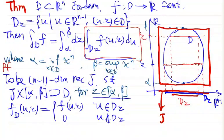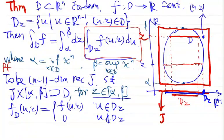For example, for the red z we discussed, the corresponding Dz is the projection here. If a point u is not in Dz — say it is here — then the point (u, z) is not in D, so the value of f_D, the zero extension, at this point is zero.